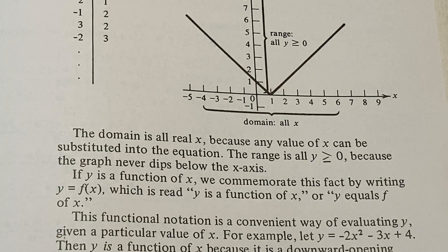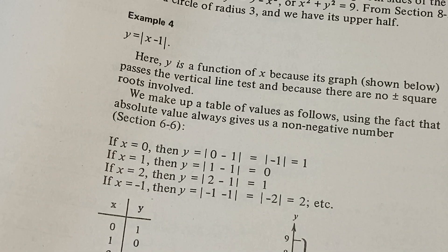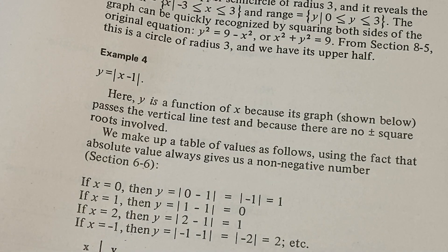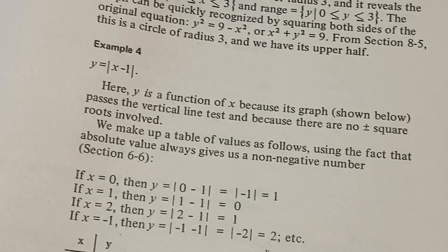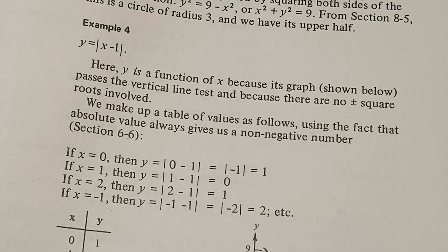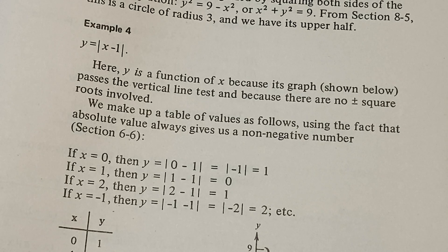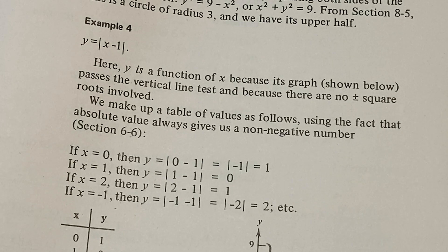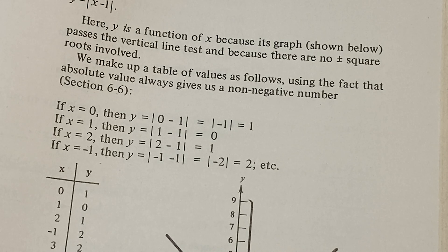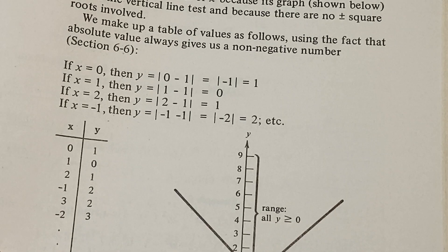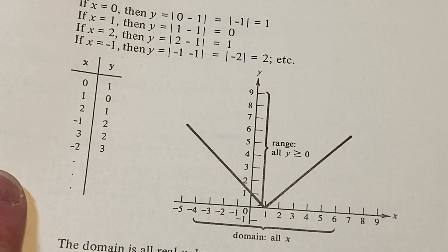This is a nice book. I very much like this book. I like the detail that they take in the examples. Like here, we're graphing something very simple. Y equals the absolute value of X minus 1. So it says here, Y is a function of X because its graph passes the vertical line test. Yep. And there are no plus or minus square roots involved. Yep. We make up a table of values as follows using the fact that absolute value always gives us a non-negative number. Okay. Yep. And then we have a V.